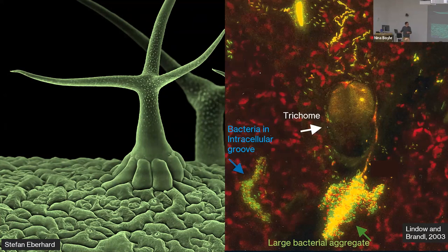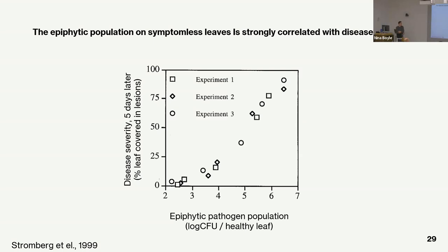Surviving in this environment is very important for the pathogen because the epiphytic population correlates very strongly with disease severity within a few days. If we can tamp down on population growth on the leaf surface, it bodes well for disease outcome. Here is a simple experiment where they inoculated the leaf surface with bacteria, waited, and saw how much disease was caused in a few days. Log 4 or 5 CFU corresponds to a single aggregate at the base of a trichome — it doesn't take much population growth to cause a big increase in disease severity.